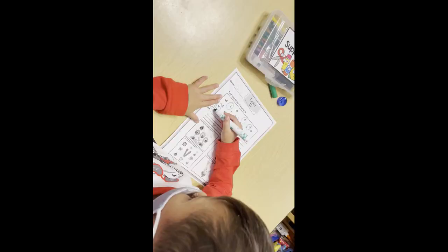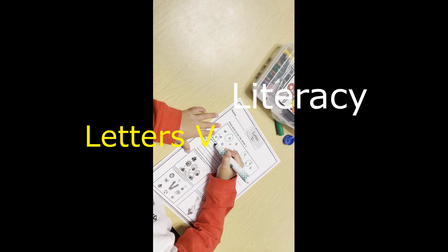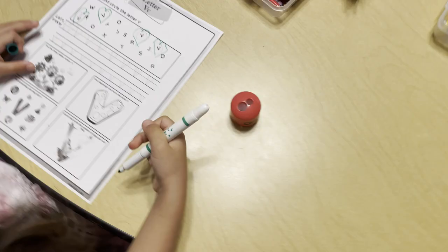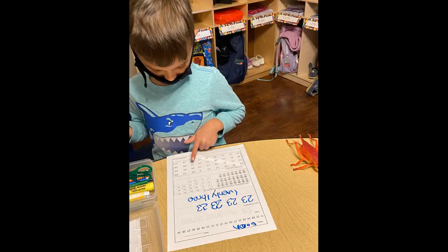So now we're going to move on to the tracing part. How we write a V is to go like this. Look.